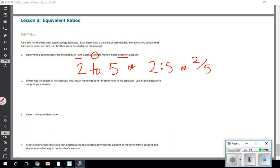Number two: if Pam has forty dollars in her account, how much money does her brother have in his account? Use a tape diagram to support your answer. If I know that the ratio is two to five, I'm going to start out with Pam and then we'll call her brother 'bro'. Pam, her ratio is two, so her tape diagram is two long, and the brother's is five. So there's a tape diagram showing Pam of two and her brother having five.